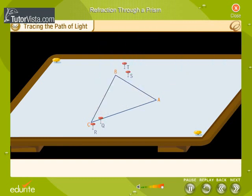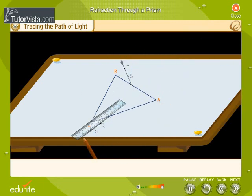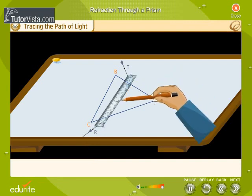Remove the pins and mark their positions. Join TS and RQ and extend them to meet the faces of the prism at P and O respectively. Join PO.